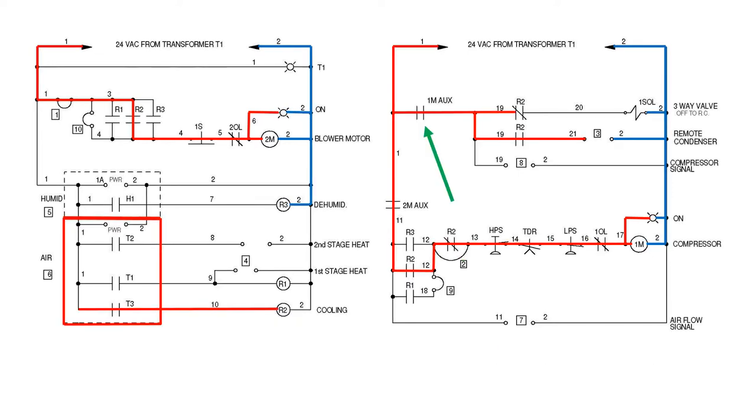The compressor contactor also has a 24 volt contact, here labeled 1MAUX, which now closes, de-energizing the three-way valve through R2 and sending the hot gas to an external condenser, which now starts. The room air is now leaving the dehumidifier cool and dry.